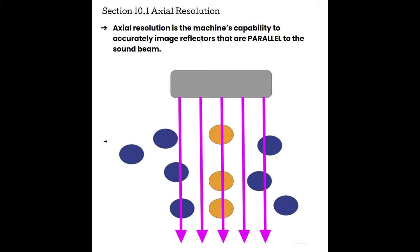Axial resolution is the machine's capability to accurately image reflectors that are parallel to the sound beam. When sound beams are emitted from a transducer, the pulse is sent directly from the face of the transducer. The sound beam travels into the body and interacts with reflectors — specifically reflectors that sit within the length of the pulse, or run in the same direction of the pulse, that we consider to be parallel to the beam. In this example, the orange reflectors are parallel with the sound beam, and how accurately they are displayed will be determined by axial resolution.